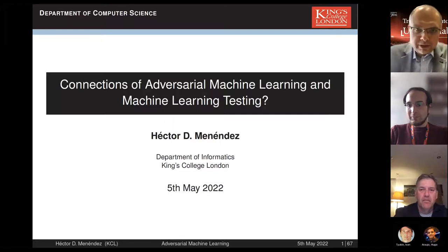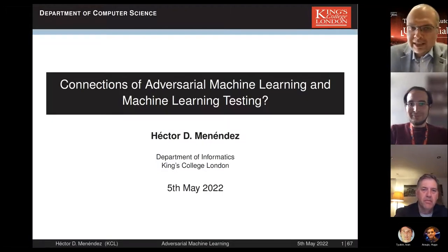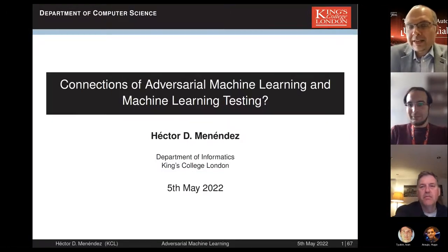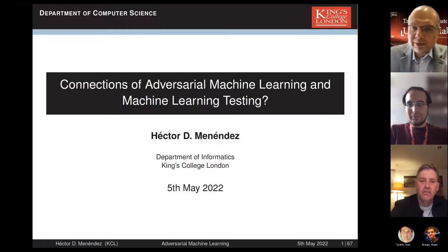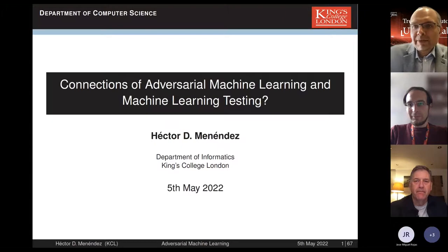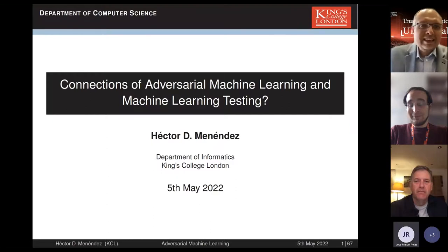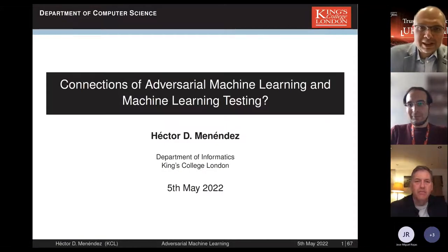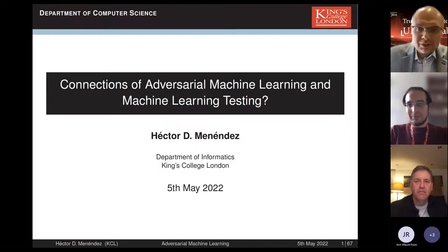Welcome everyone to this edition of the Verifiability Talk. It's my honor to introduce our speaker Hector Menendez. Hector is a lecturer at King's College London and his area of expertise and interest is in machine learning, cyber security and software testing. He got his PhD from the Autonomous University in Madrid and spent five years of postdoc at UCL with David Clark, and has done a lot of research on evolutionary algorithms and their application to testing various types of software but also to machine learning.